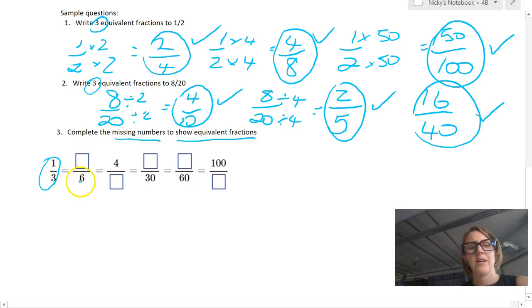So here I've got one third is my first fraction here. And an equivalent fraction has the denominator of six already written. So I need to ask myself, what have they done to the three to make it to a six, divided or multiplied? And here you can see they've times it by two. So that means I've got to do the same to the top. And that would give me an answer of two sixths.